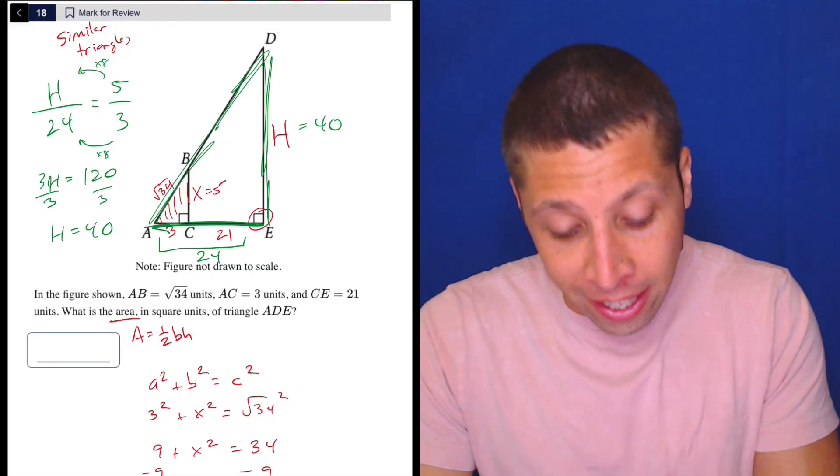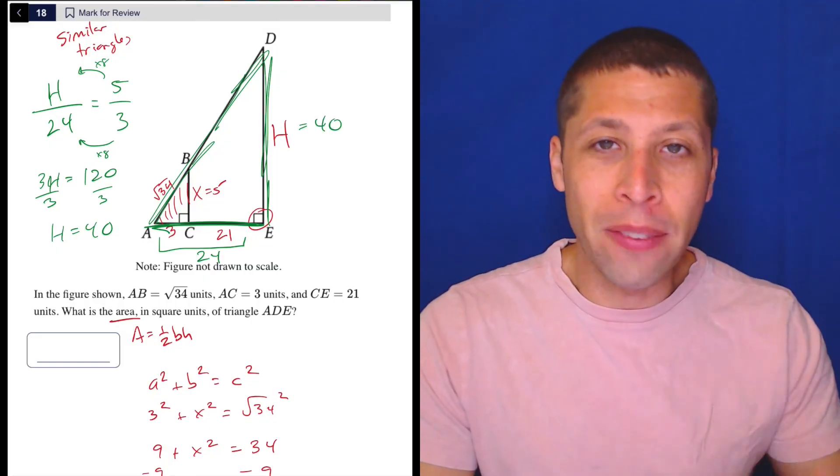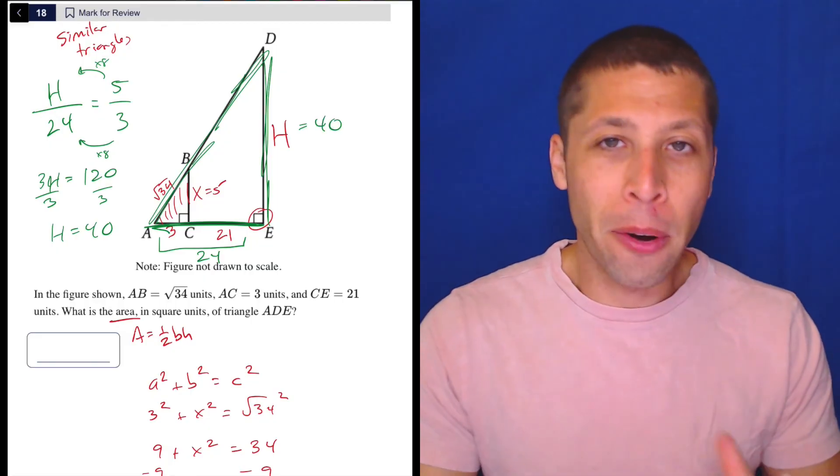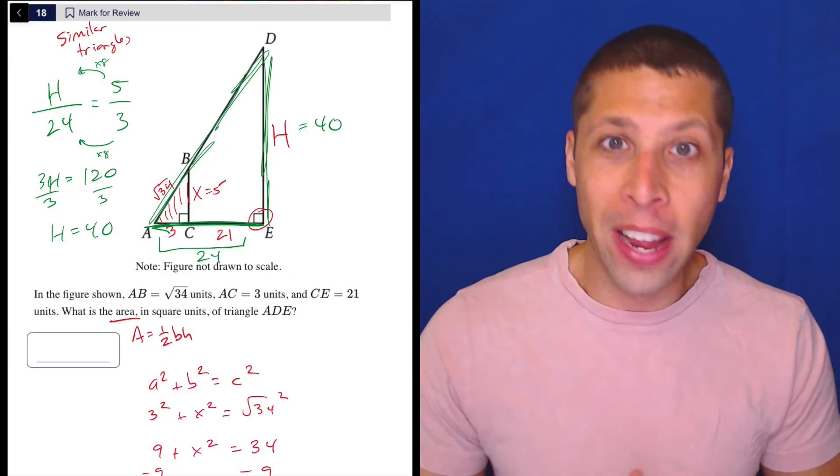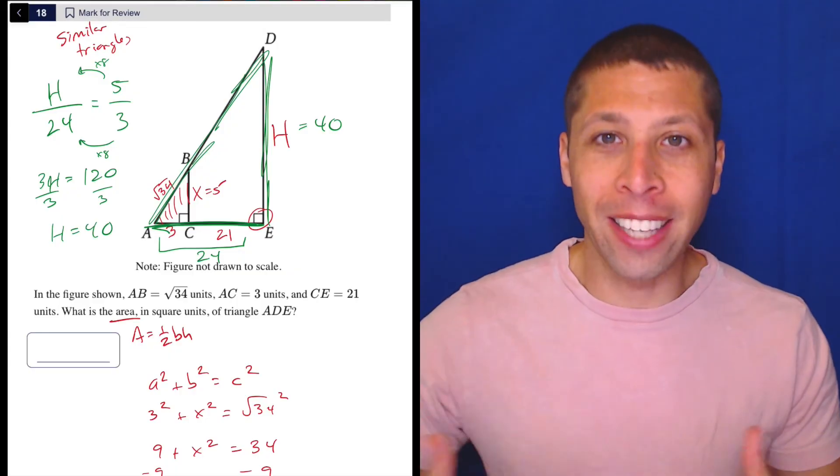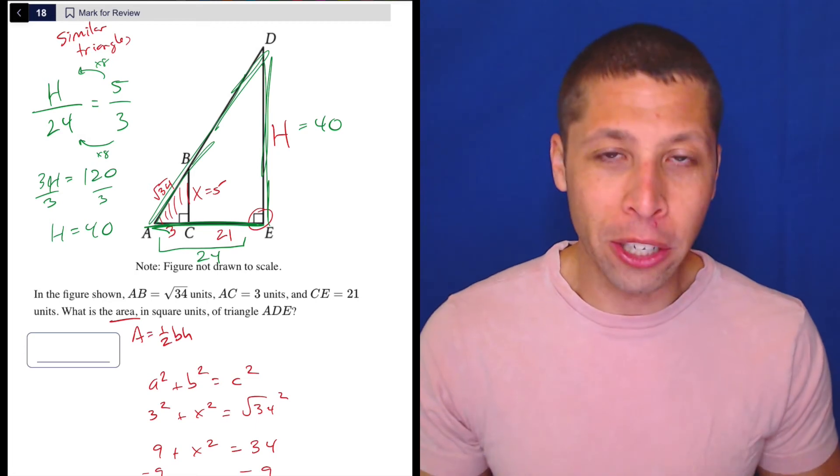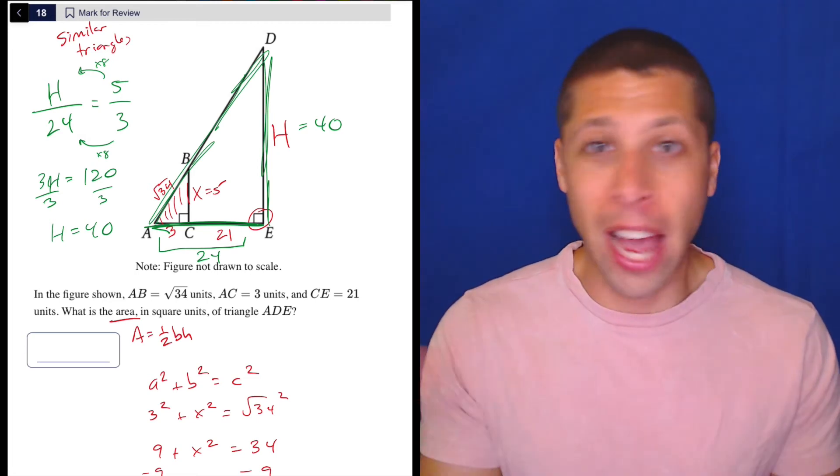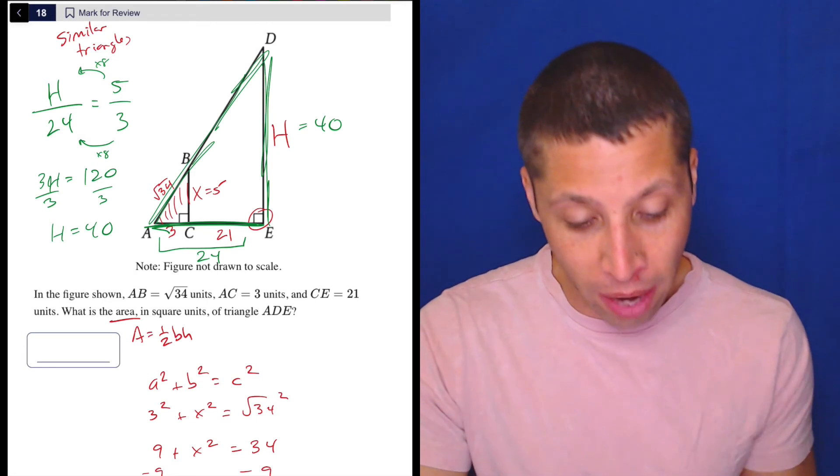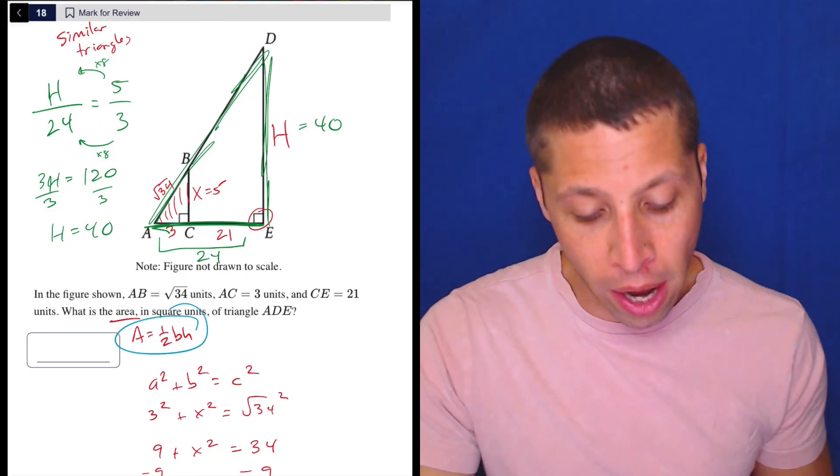But we're not done. And this is something that we'd have to worry about even if we had multiple choices here. Remember, with these geometry questions, especially the advanced ones, they often want us to stop short. We get like an x equals moment, and we feel really good, but then we have to do something else. We have to add two sides together, or in this case, we have to go back and find the area of the triangle.